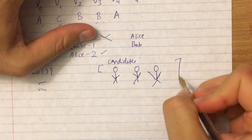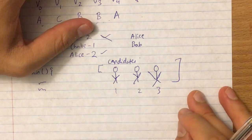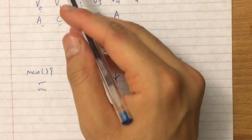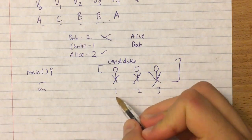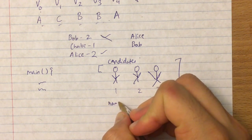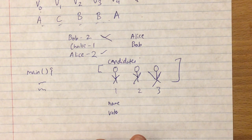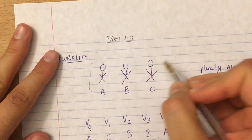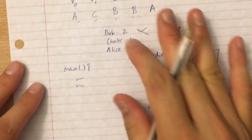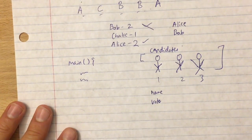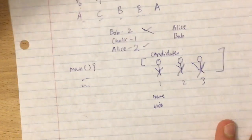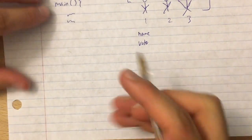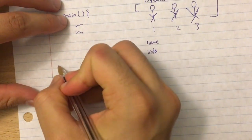The only fill-in-the-blanks we have to do is with respect to the vote function and the print winner function. The vote function takes in a string — the name — and basically updates the vote for a candidate.